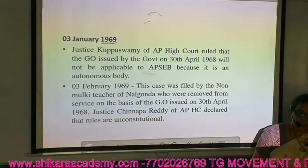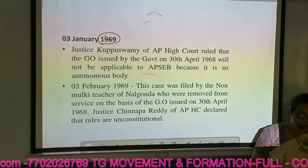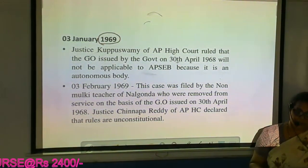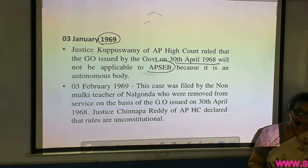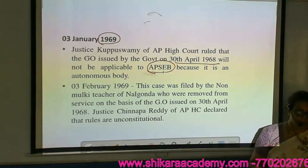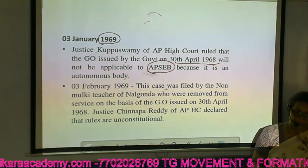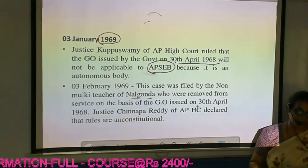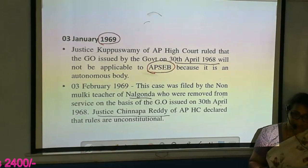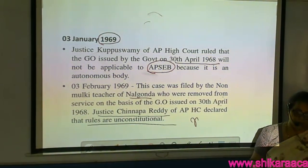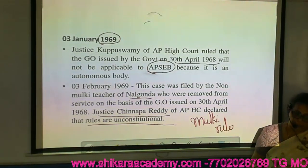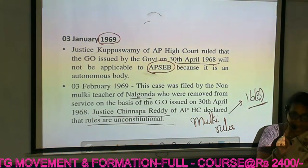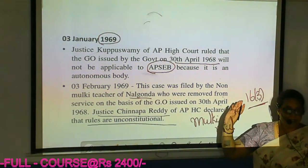Now the judgments — this is the judgment we discussed as the cause of the 1969 agitation. Justice Kuppuswamy of the AP High Court ruled that the GO issued by the government on 30th April would not be applicable to AP SCB, because AP SCB is an autonomous body. Then on 3rd February 1969, a case was filed by non-Mulki teachers of Nalgonda who were removed from service on the basis of the GO issued on 30th April. Justice Chinna Pareddy declared that Mulki rules are unconstitutional on the basis that Article 16 Clause 3 is applicable to the entire state, not one region.